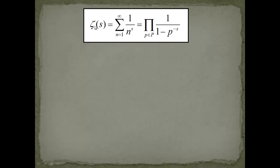One can rewrite the zeta function — which is the sum over integers with the power of s — as an infinite product. This sign is the big Greek letter pi, or P for product. It was Euler who introduced this to math; he also introduced the sum sign, which stands for sigma. Now what we have in this product is one over one minus p to the minus s, where p is a prime number.